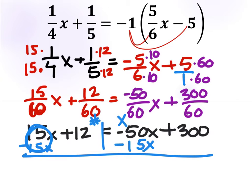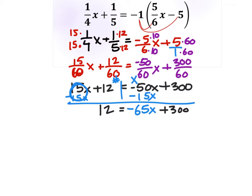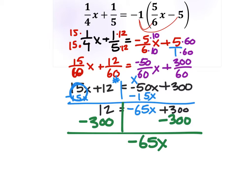So, twelve did not change at all, and this equals negative fifty x minus fifteen x gives us a negative sixty-five x, and this of course is plus that three hundred. Now I've got that plus three hundred on the wrong side, it doesn't have an x, so I'm going to have to subtract three hundred from both sides. And the negative sixty-five x stays, and this equals twelve minus three hundred, which is negative two hundred and eighty-eight.